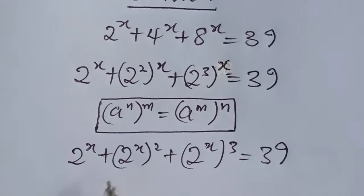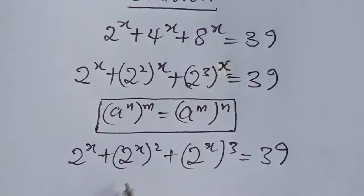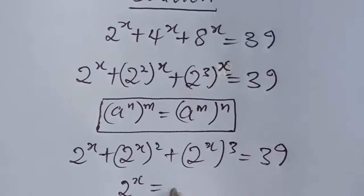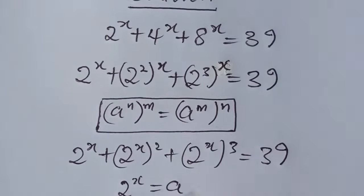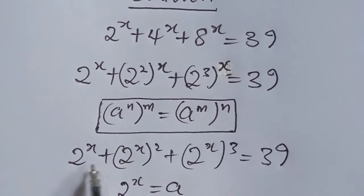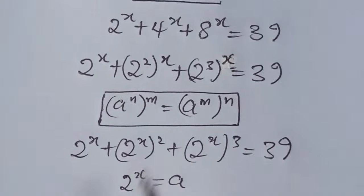So what we do now is to set 2 to the power of x equal to a. Then we replace a with where we have 2 to the power of x.